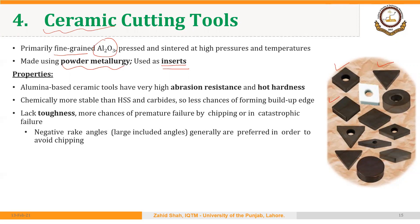Aluminum-based ceramic tools have very high abrasion resistance. They are very hard, and they have very high hot hardness as well, so they can maintain their hardness at very high temperatures. They are chemically more stable than high-speed steel and carbide, so there are less chances of forming a built-up edge — a problem that occurs with soft materials when using HSS or carbide, but is avoided when using ceramic cutting tools.